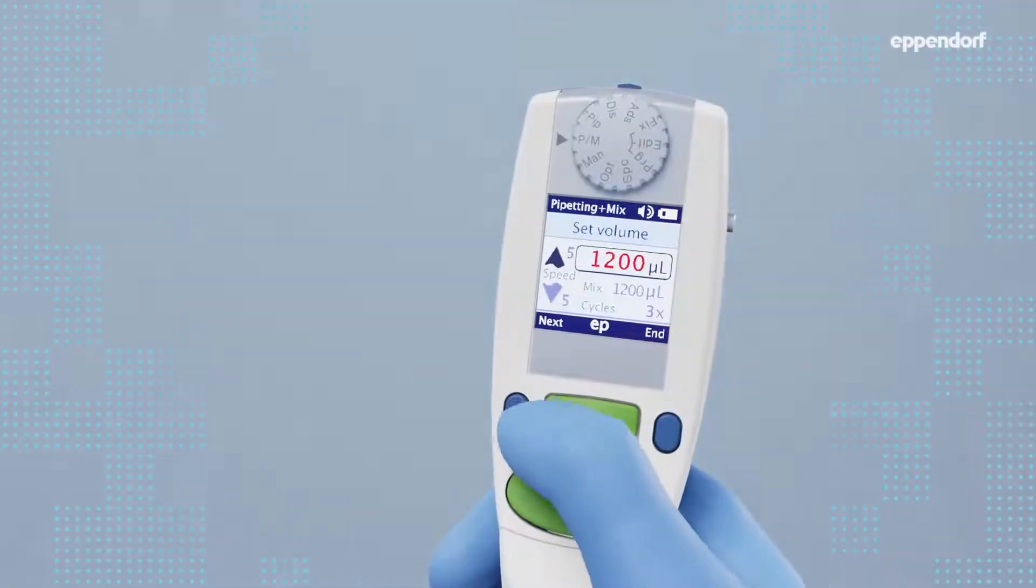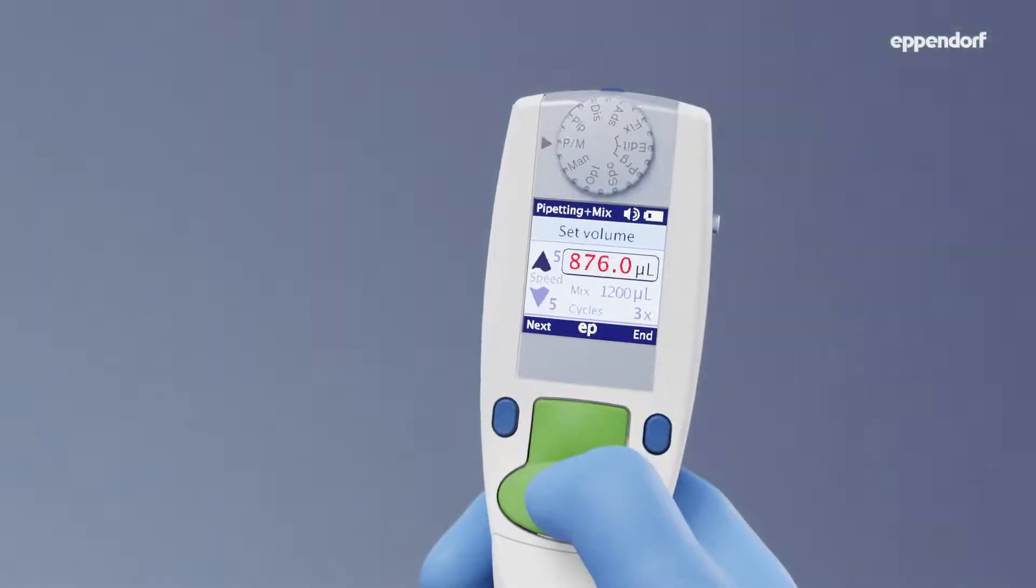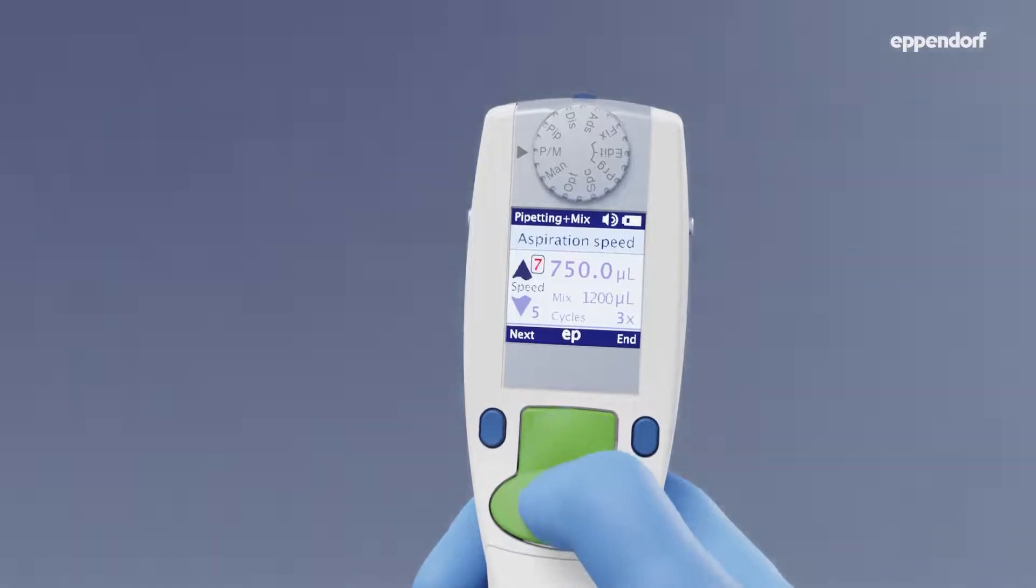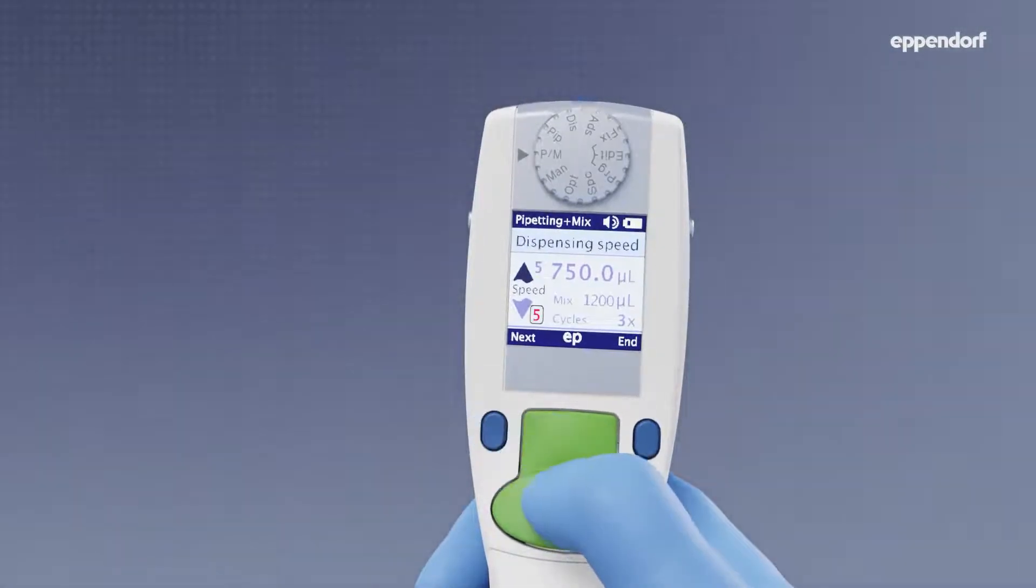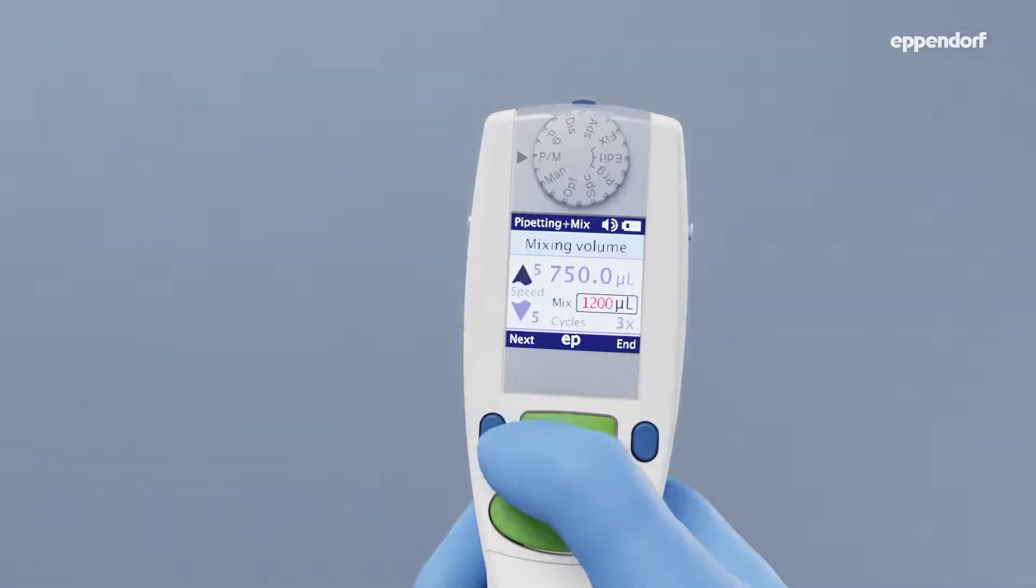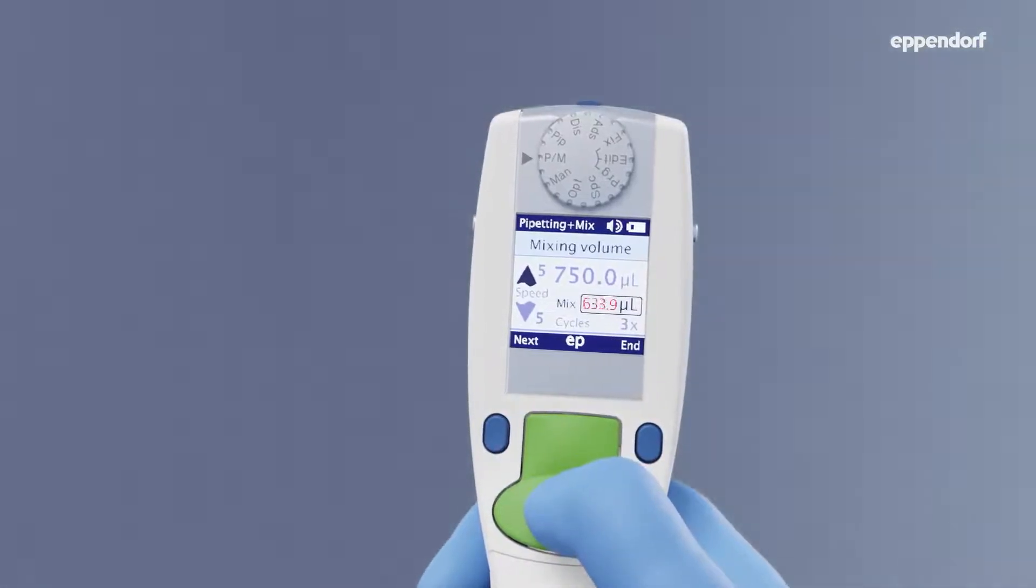Depending on the individual technique used, pipetting and mixing with mechanical pipettes can result in lower reproducibility. With fixed pipetting speeds and mix cycles, electronic pipettes minimize the variability different pipetting practices may introduce. With Eppendorf Xplorer pipettes, even the mixing volume may be individually set.